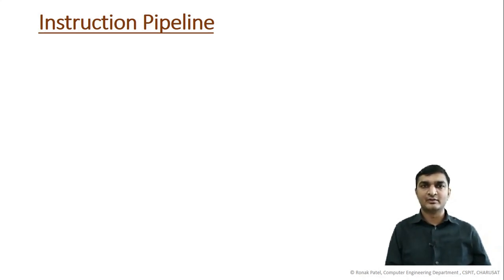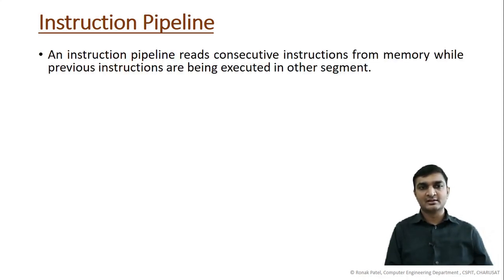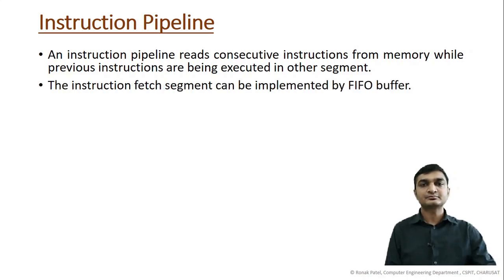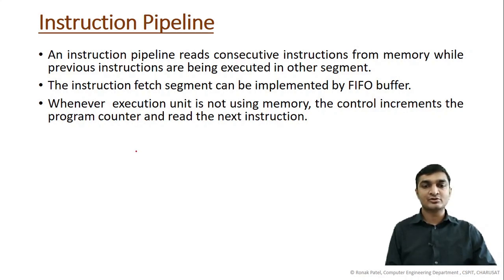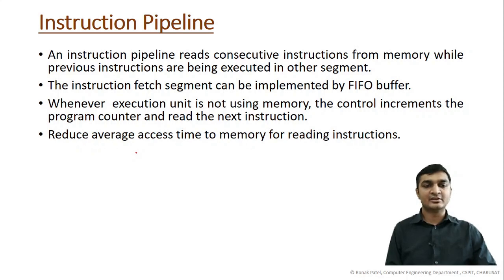In the previous video we saw arithmetic pipeline. The second approach is instruction pipeline. In instruction pipeline, it reads consecutive instructions from memory while previous instructions are being executed in other segments. We are overlapping the phases of instruction. The instruction fetch segment can be implemented by a FIFO buffer, so instructions that come first will be executed first. Whenever the execution unit is not using memory, the control increments the program counter and reads the next instruction, reducing average access time to memory.